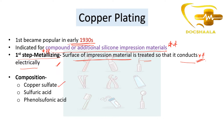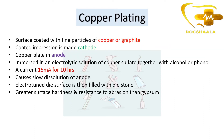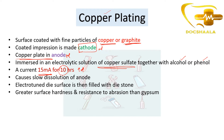The composition of the copper-plated electroform die solution is copper sulfate, sulfuric acid, and phenolsulfonic acid. The surface is coated with fine particles of copper or graphite, and the coated impression material is made the cathode. The copper plate serves as the anode, immersed in an electrolytic solution of copper sulfate with alcohol or phenol. A current of 15 milliamperes is passed for 10 hours.